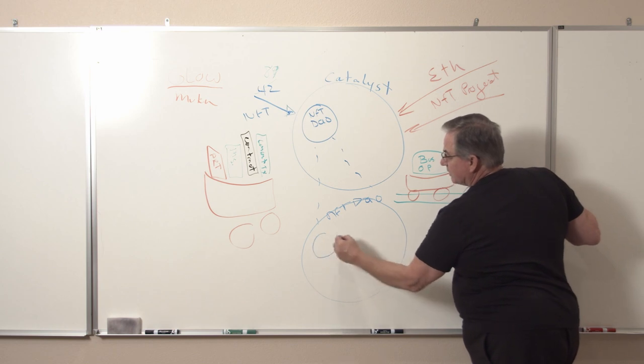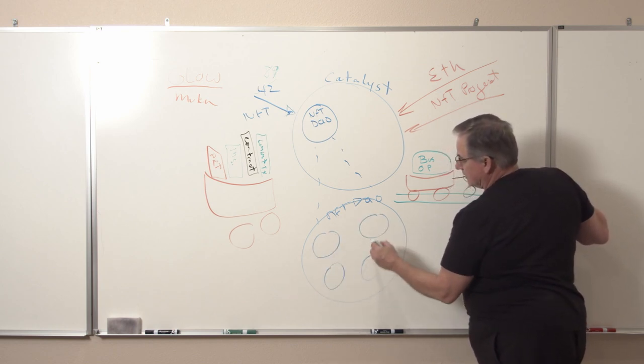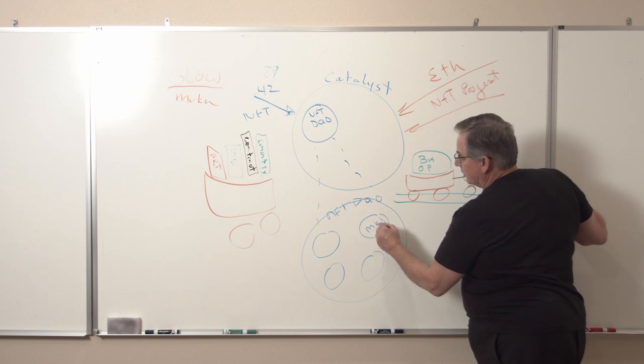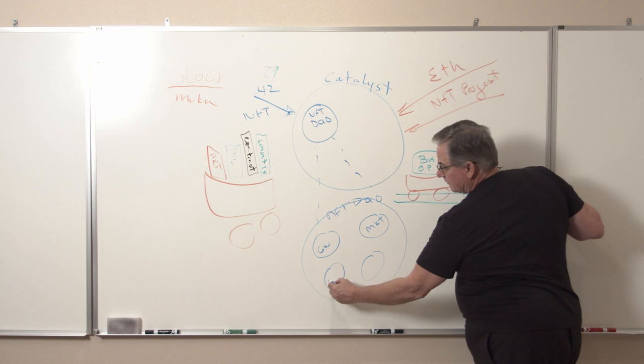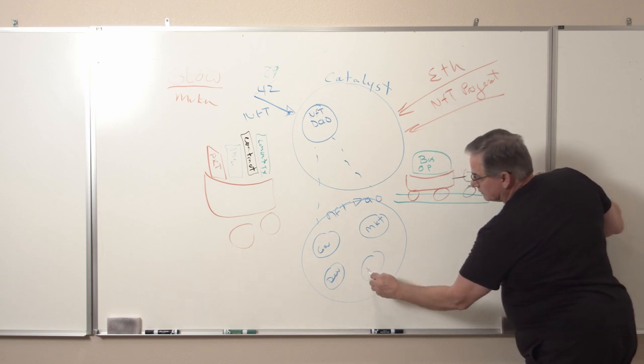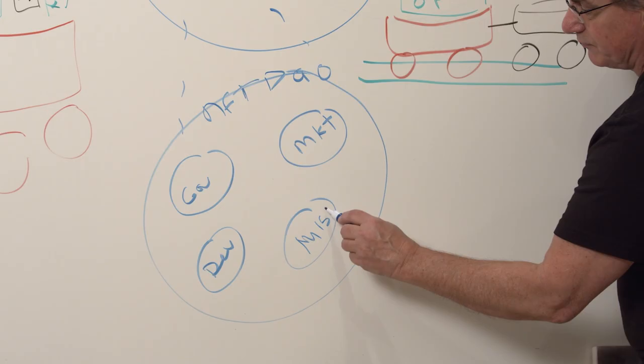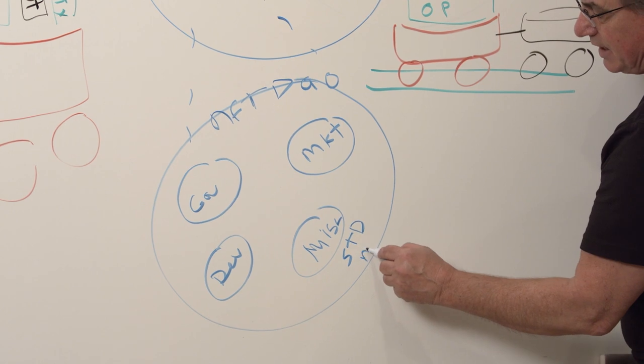It's comprised of a holonic architecture right now, and that includes a marketing holon, a governance holon, a developer holon, and there's the miscellaneous stuff around standards and metadata.